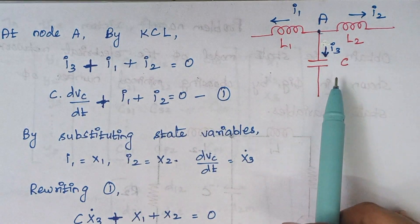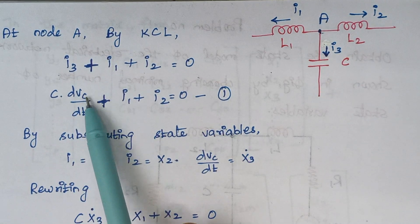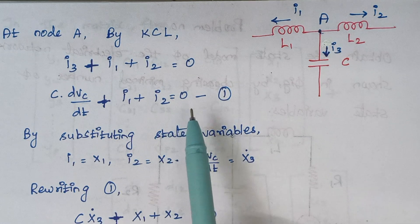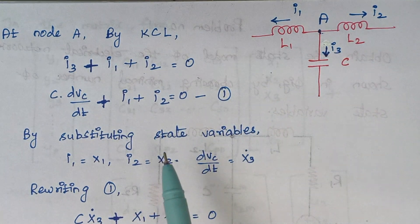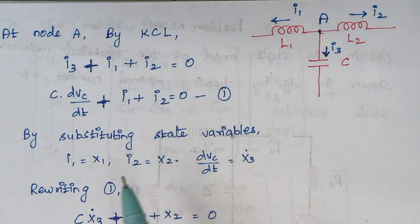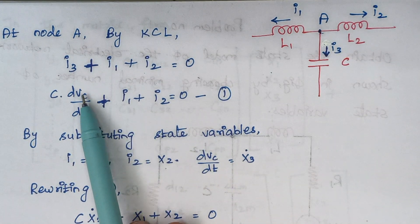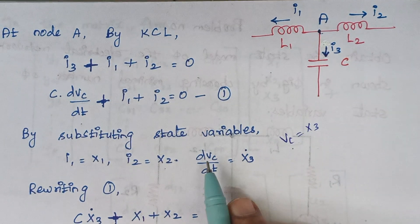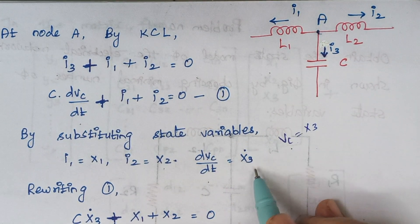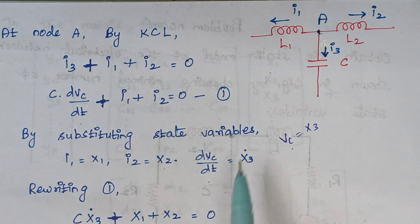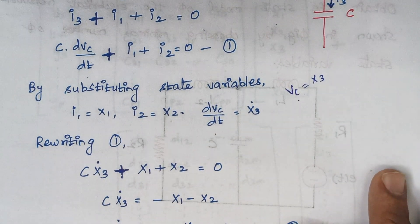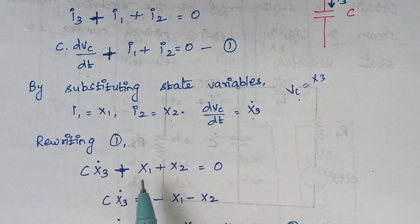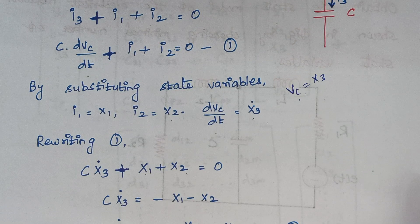The current flowing through the capacitor can be written as C times dVc/dt. So: C·(dVc/dt) plus I1 plus I2 equals 0. Now we are replacing I1, I2, and Vc by X1, X2, and X3 accordingly. I1 equals X1, I2 equals X2, and since Vc equals X3, differentiating gives dVc/dt which equals X3 dot, the first derivative of X3.